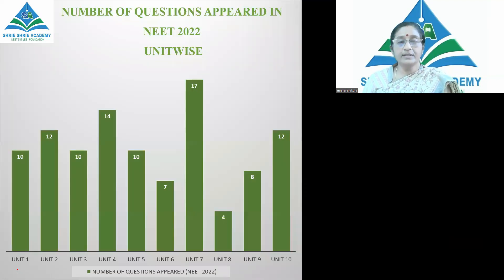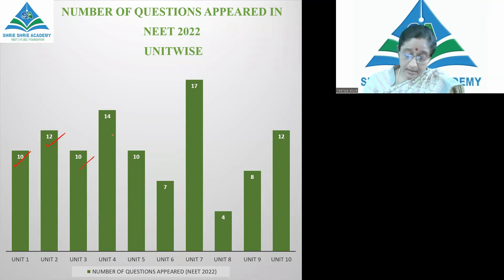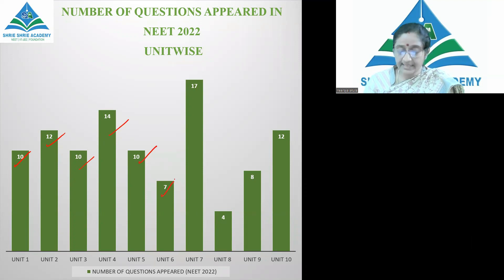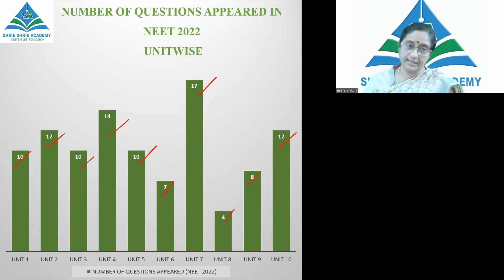The number of questions that appeared in NEET 2022: Unit 1 — 10 questions, Unit 2 — 12 questions, Unit 3 — 10, Unit 4 — 14 questions, Unit 5 — 10, Unit 6 — 7 questions, Unit 7 — 17 questions, Unit 8 — only 4 questions, Unit 9 — 8, and Unit 10 — 12 questions.